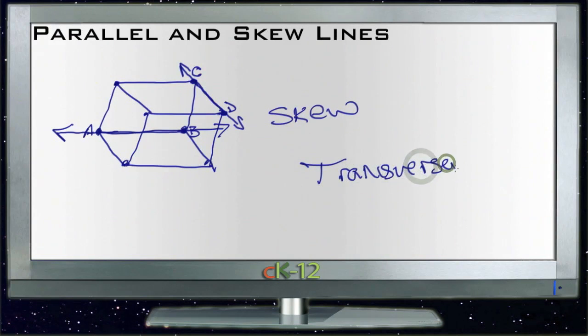Transversals. A transversal is a line that cuts across two other lines. So if I have two lines, say parallel lines like so, the transversal would be the line that cuts through those two. So this line right here, line C, would be a transversal for A and B.